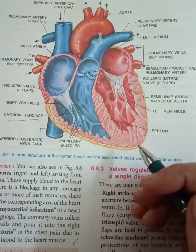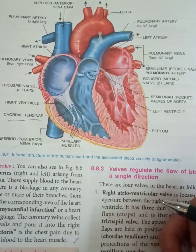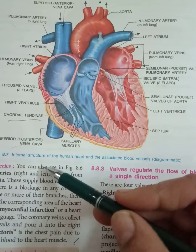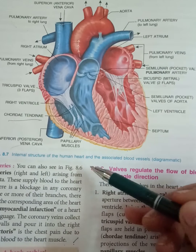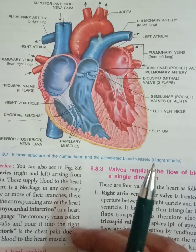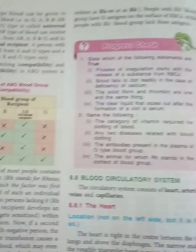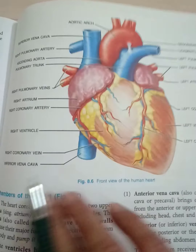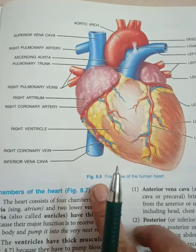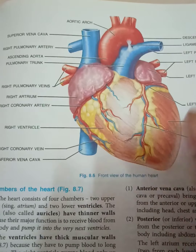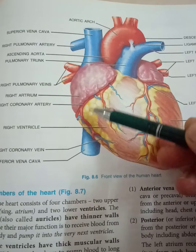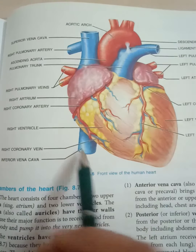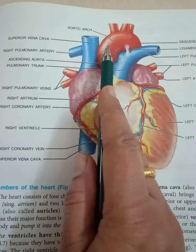Good morning class. This is figure 8.7. Figure 8.6 was showing you external features of the human heart and associated blood vessels — those labelings I have not explained to you. So I would like to explain both 8.6 and 8.7 to you. If you see the front view of the human heart, beginning from the upper structures...